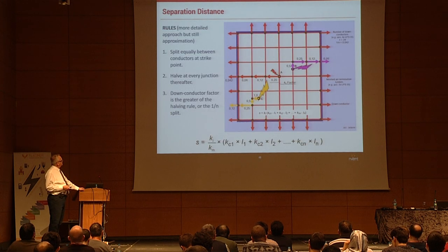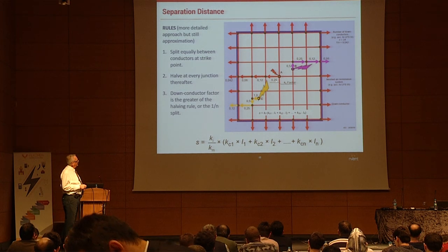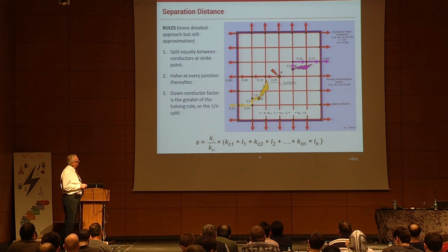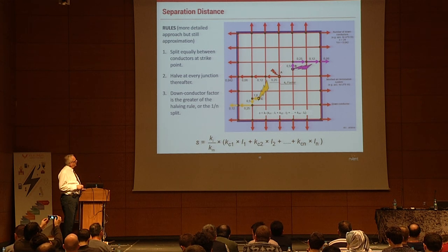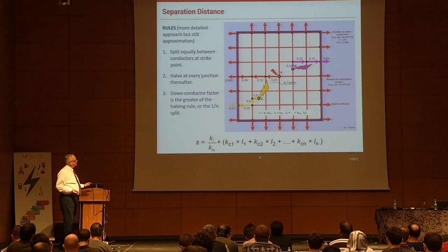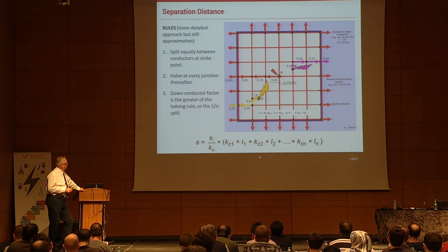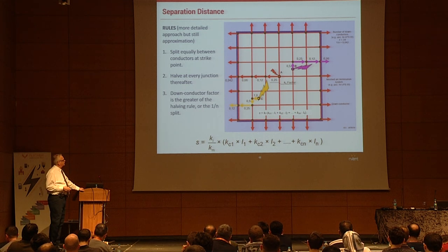For a block building with a more complex network, if the strike hits in the middle the current splits evenly in four directions — a quarter of the energy going each way. At every junction point after that, you get half of that. The formula becomes more complex, but these examples are directly from the standard so you can refer to them.